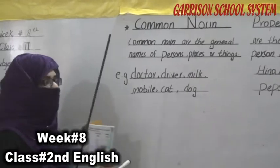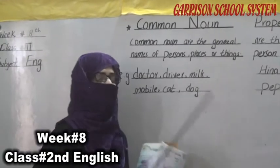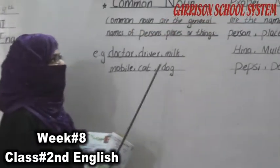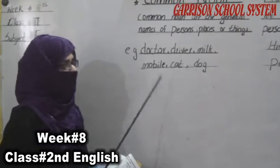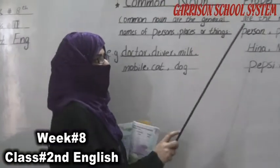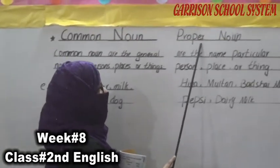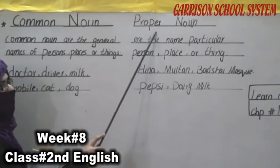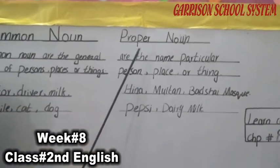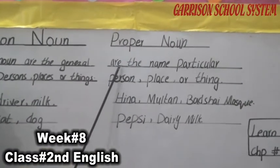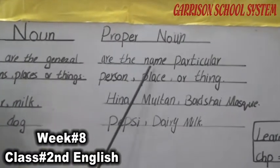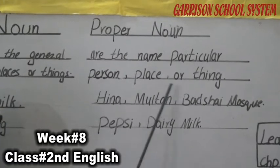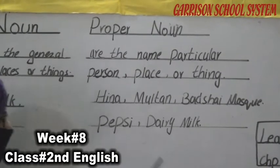Now you have a clear concept in your mind that common nouns are the general names — general names that every person uses. Now we will learn about the proper noun. Do you have any clear concept about proper noun? Proper nouns are the names of a particular person, place, or thing.